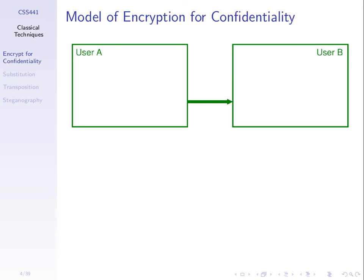In our general model, we assume there are two users, A and B. A wants to send a message to B such that B can read it, but no one else can. We introduce an attacker, user C, and we assume that when A sends something to B, the attacker can somehow intercept and read anything sent — whether by intercepting a wireless link, tapping a hardware line, or gaining access to a router in the network.